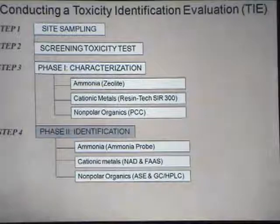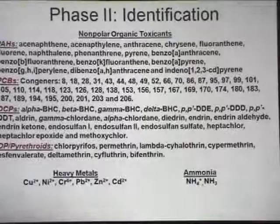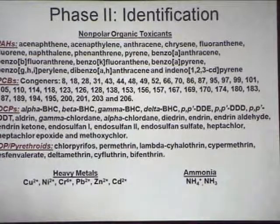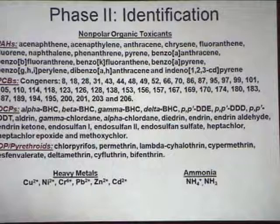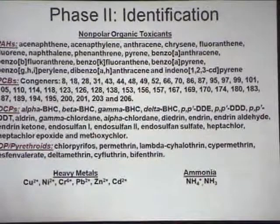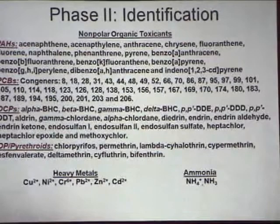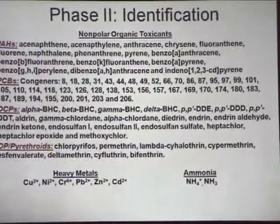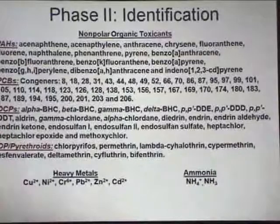To identify which non-polar organics are involved, we analyzed a substantial number of analytes: 21 polycyclic aromatic hydrocarbons, 42 PCB congeners, 21 organochlorine pesticides, 1 organophosphate, 4 pyrethroids — which I've studied in California sediments and found in almost everything including sewage treatment plant effluent — 7 pyrethroid insecticides, 6 heavy metals, and total ammonia. This is a pretty extensive list. Normally in a standard TIE you'd just look at non-polar organics, but EPA methods had just come out for sediment TIEs, so we ran the entire analyte list.